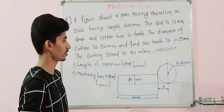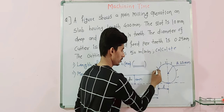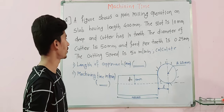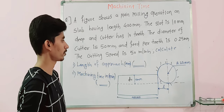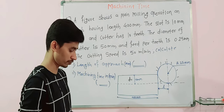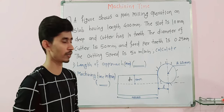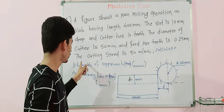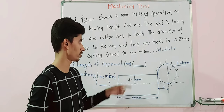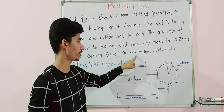The cutter has 10 teeth. The diameter of the cutter is 50 mm, so the radius is 25 mm as shown in the figure. The feed per tooth, Ft, is given as 0.25 mm. The cutting speed V is equal to 50 meters per minute.